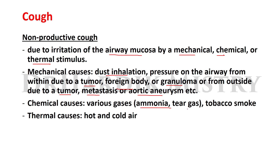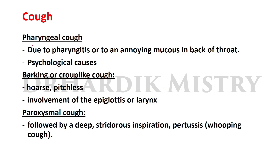Chemical causes of non-productive cough include various gases such as ammonia, tear gas, or tobacco smoke. Thermal causes include hot and cold air. Pharyngeal cough is due to pharyngitis or annoying mucus in the back of the throat, and also due to psychological causes. Barking or croup-like cough is hoarse and pitchless, with involvement of the epiglottis or larynx. Paroxysmal cough is followed by deep stridorous inspiration, seen in pertussis — a whooping type of cough.